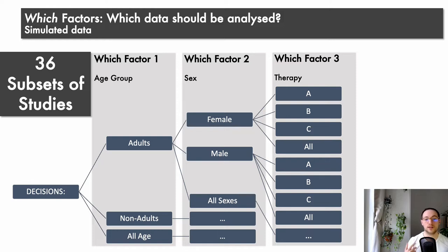First, we have to decide on the which factors, that is, which data or study subsets should we analyze. Imagine we have a research question: how effective are psychological interventions for individuals with depressive symptoms? Here we could decide to include studies based on different age groups, different sexes, or different therapies. And this could lead to different paths. For example, we could include only adults and only male participants and only studies that investigated therapy B. And you can also see that there are a lot of different resulting study subsets that could be analyzed. In our simulated example, there are 36 subsets of studies that could be analyzed in such a way.